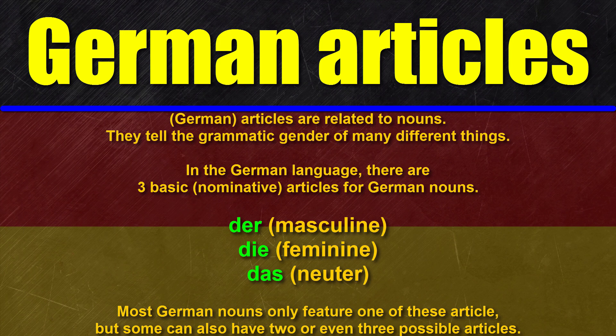Der Löwe singular, die Löwen plural. Die Blume singular, die Blumen plural. Das Meer singular, die Meere plural. But German articles aren't stiff things. They can change depending on the grammatical case of an object or in the context of a sentence. However, in this video I only want to talk about the non-flectated, the nominative articles der, die, and das.